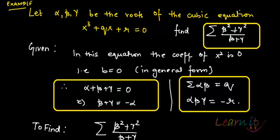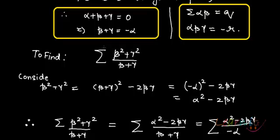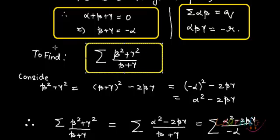So we need to find the summation of (β² + γ²) upon (β + γ). Let us consider the numerator: β² + γ² equals (β + γ)² minus 2βγ. I can write β + γ in terms of alpha, and this becomes α² minus 2βγ.